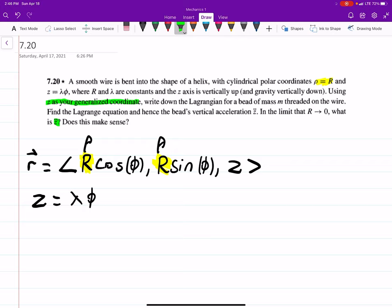So because of that, we want this in terms of z. So we're going to use this other equation they gave us to find what our variable phi is equal to. Which if we divide over, we can see that phi is equal to z divided by lambda.